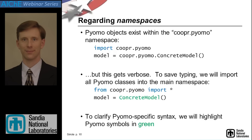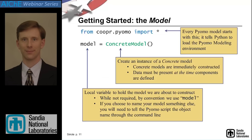When writing PyOMO models, the first thing to know is a little bit about namespaces. We put everything inside the cooper.pyomo namespace. However, that tends to get verbose, so we do a little sleight of hand and import everything from cooper.pyomo into the global namespace — this is equivalent to using namespace standard in C++. That makes it a little less clear what's coming from PyOMO and what's coming from Python. Every PyOMO model will start with boilerplate pulling in the modeling components, and every model has to be declared — in this case, as a concrete model.